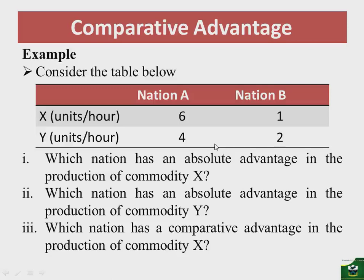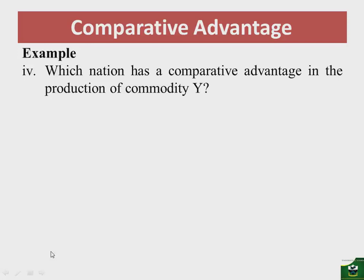The next question is: which nation has a comparative advantage in the production of commodity Y? With this, we see that since nation A has a huge advantage in producing X relative to Y, the gap for Y is smaller.